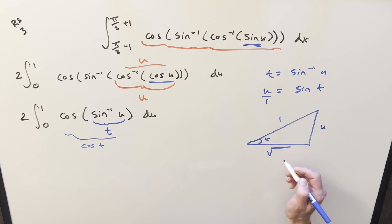Pythagorean theorem, find the third side. 1 minus u squared. So for our integral, what we need is cosine of t. Cosine adjacent over hypotenuse. So we can get our value. Cosine of t is just going to be square root 1 minus u squared.